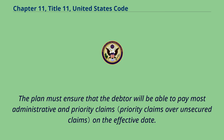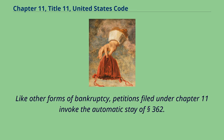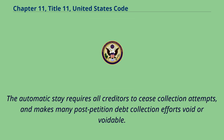The plan must ensure that the debtor will be able to pay most administrative and priority claims on the effective date. Like other forms of bankruptcy, petitions filed under Chapter 11 invoke the automatic stay of Section 362. The automatic stay requires all creditors to cease collection attempts, and makes many post-petition debt collection efforts void or voidable.